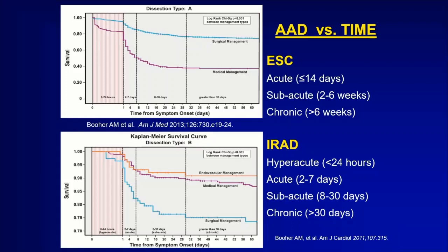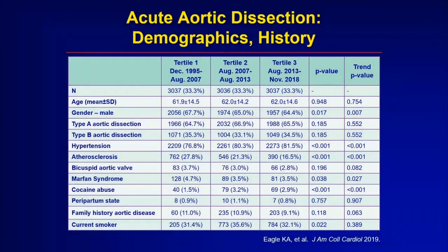The type B dissection is in a different part of the aorta, and when we can, we try to treat those patients medically, though some do need further interventions. The patients in our international study show that the average age of a patient with an aortic dissection today is about 62. Roughly two-thirds of them are men and a third are women. The type A aortic dissection applies to about two-thirds of the patients we see.